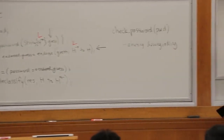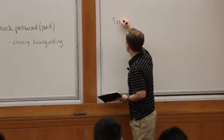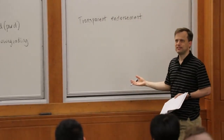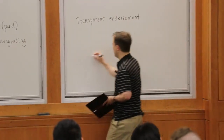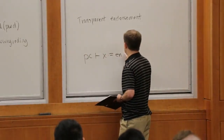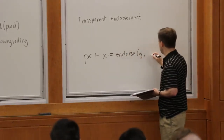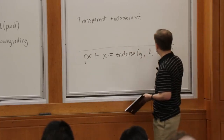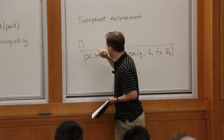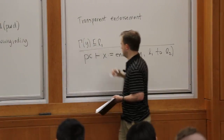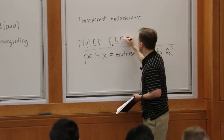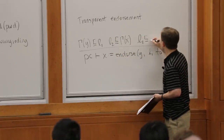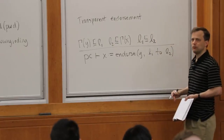Here is the rule for transparent endorsement. We call it transparent endorsement because you shouldn't be endorsing secrets under certain circumstances. Just like before, I'm going to write the typing rule for a statement that lets us endorse some variable and assign the result into another variable. Gamma of Y needs to say that it can flow to L1, and L2 needs to flow to gamma of X. And then we need some kind of rule for connecting L1 and L2 — L1 needs to flow to L2 with a little bit of help, just like with robust declassification.